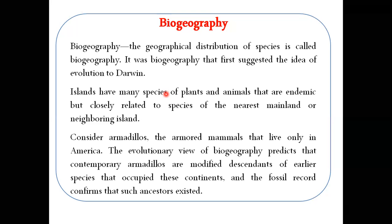In the Galapagos Islands, Darwin observed that plant and animal species are specific to the island — called endemic, or native. But they are closely related to species of the nearest mainland. He observed that islands have many species of plants and animals that are endemic but closely related to species of the nearest mainland or neighboring land.